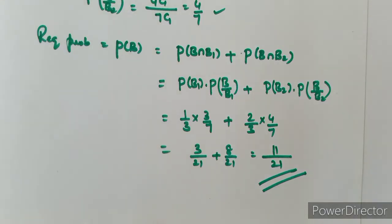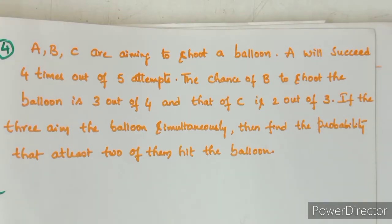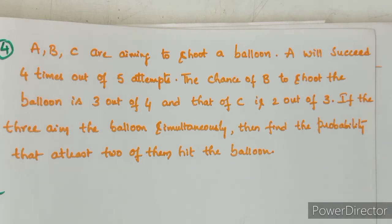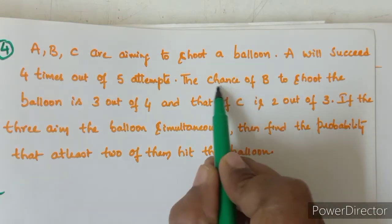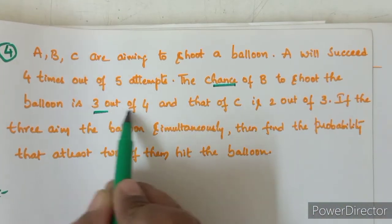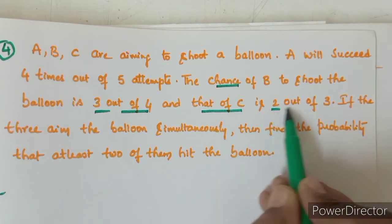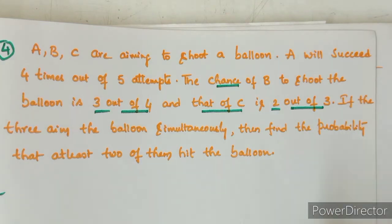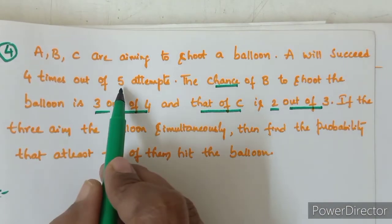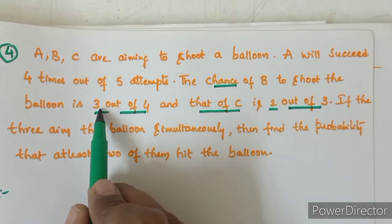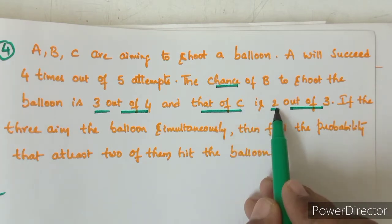Students should also practice that. Now we will see the fourth question in Exercise 9C. A, B, C are three persons who aim to shoot a balloon. A will succeed 4 times out of 5 attempts. The chance of B to shoot the balloon is 3 out of 4, and that of C is 2 out of 3. So probability of A is 4 by 5, probability of B is 3 by 4, and probability of C is 2 by 3.